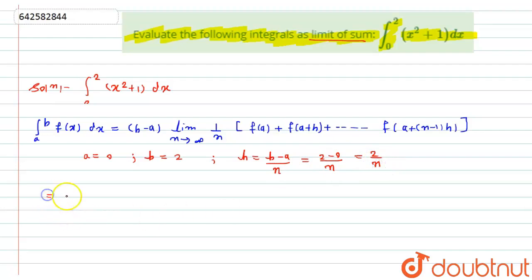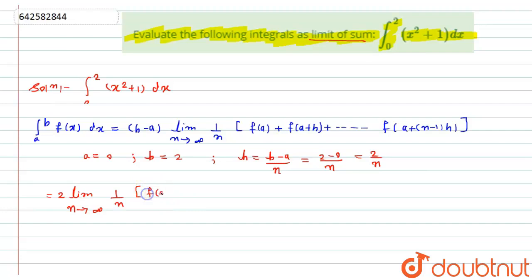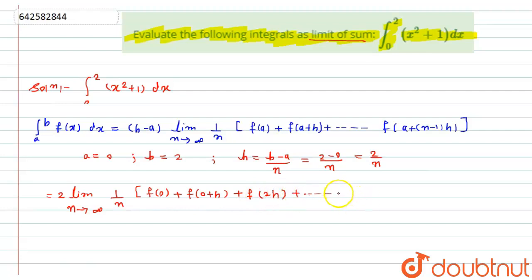Now I simply put the values. So (b minus a) means 2 minus 0, which is 2, times the limit as n tends to infinity, times 1 by n. Now f(a) means f(0), plus f(a plus h) means f(0 plus h). Similarly it will become f(2h) plus up to f((n minus 1)h).